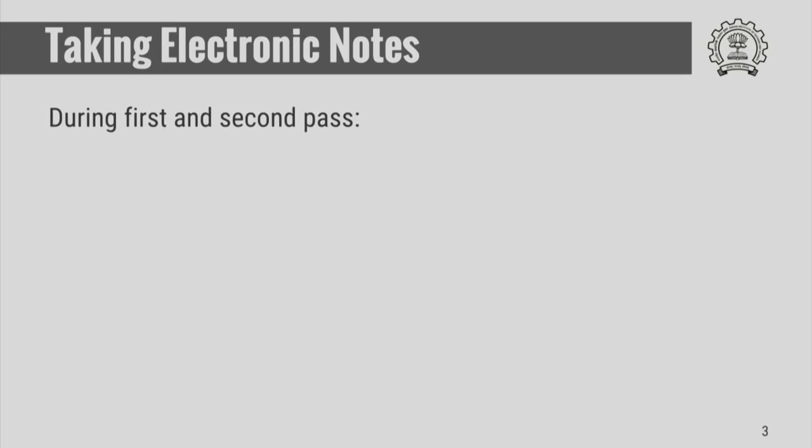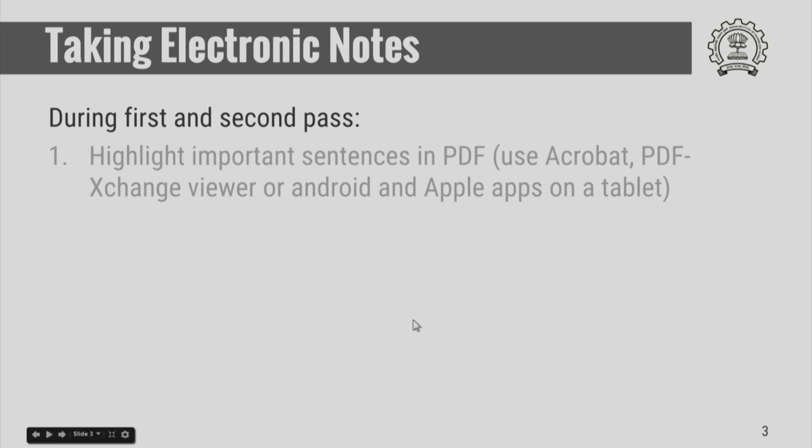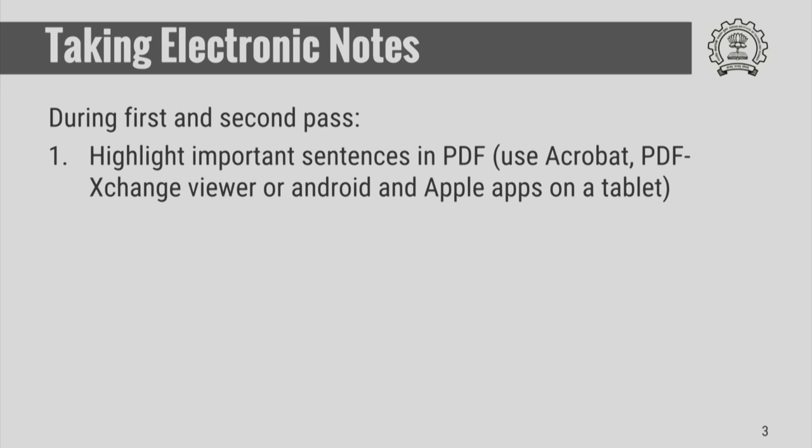Let me now tell you about an electronic way to take notes, in contrast to the traditional way. You could use some of the convenient tools available in electronic software. During the first pass and the second pass reading, when you read a particular paper on a computer, you highlight important sentences, either in PDF using Adobe Acrobat or other software such as PDF Exchange Viewer or Android applications on a tablet.